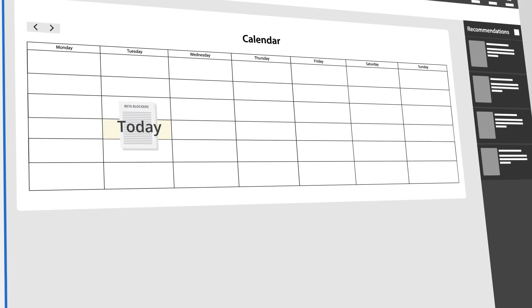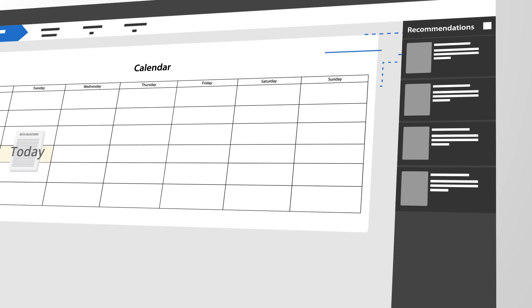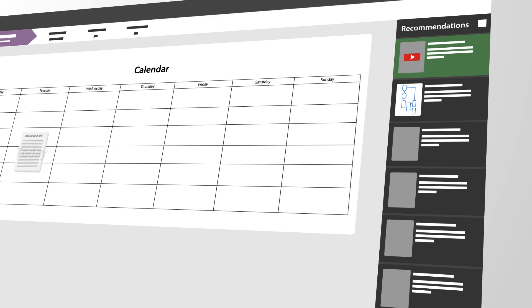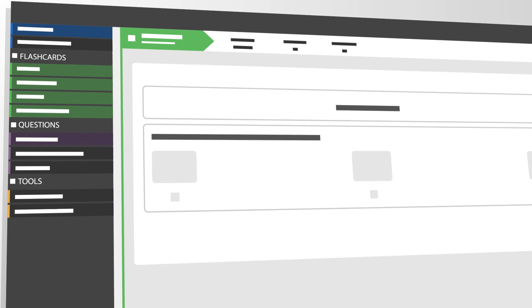For example, say you have a lecture on beta blockers today. Osmosis will recommend a mnemonic about the mechanism of action, a video of a patient who has arrhythmias, and high-yield flashcards for your class and board exams.